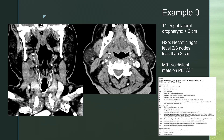For case three, we have a mass involving the lateral wall of the right oropharynx. It is easier to see on the coronal view — you can see this thickening along the lateral wall, as opposed to the nice smooth mucosa on the left side. Here's the tonsillar pillar above it. On the coronal view, you can also see some adjacent necrotic lymph nodes at level two down towards level three. On the axial view, you can see that subtle thickening of the lateral wall of the oropharynx.